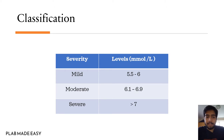You can see here in the chart, there is severity on the left side and levels in millimoles per liter on the right side. If the levels are 5.5 to 6 it's mild, from 6.1 to 6.9 it's moderate, and greater than 7 it's severe hyperkalemia.